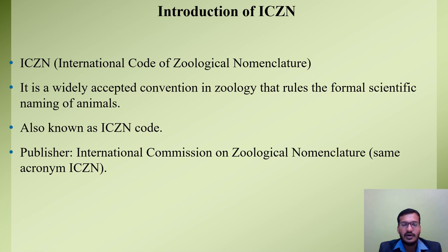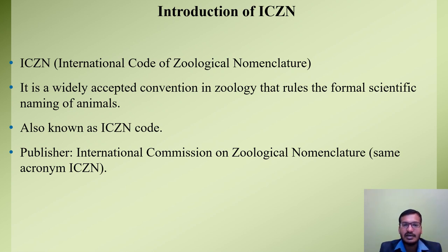This is Part 1: Introduction of ICZN. The full form of ICZN is International Code of Geological Nomenclature. It is a widely accepted convention in Geology that rules the formal scientific naming of animals, meaning all organisms considered as animals are named according to the rules of ICZN. ICZN is also known as the ICZN Code.